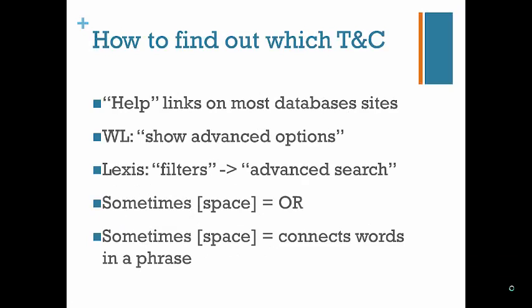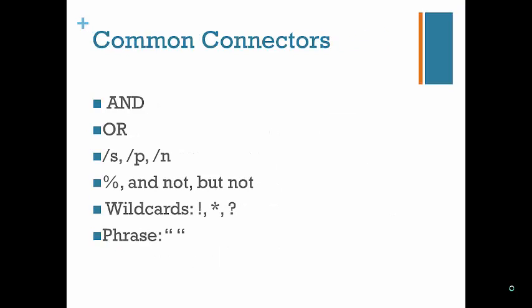Now that we have an idea of when to use a Terms and Connectors search, how do we know which Terms and Connectors to use? There are some standard connectors such as AND and OR. However, many databases have their own idiosyncratic connectors, or some connectors have different functions depending on the database. Thankfully, most databases provide information about what connectors they use in help sections on their website. In addition, databases like Lexis and Westlaw have helplines with research attorneys who can help you craft searches. I also maintain a Terms and Connectors cheat sheet listing the connectors for major legal research databases — please let me know if you would like a copy.